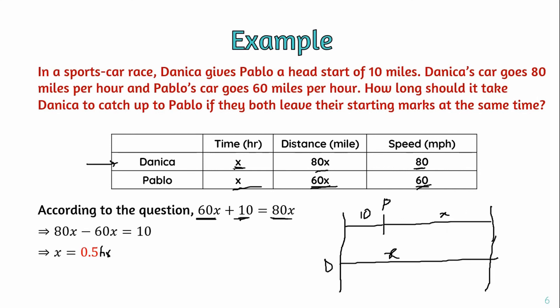Summarizing: Pablo had a 10-mile head start. In x hours, Pablo covers 60x miles and Danica covers 80x miles. Setting 80x equal to 60x plus 10, we solve to get x equal to 0.5 hours. Using visualization and formula together makes these problems easier to solve. That's all for today, thank you for watching this video.